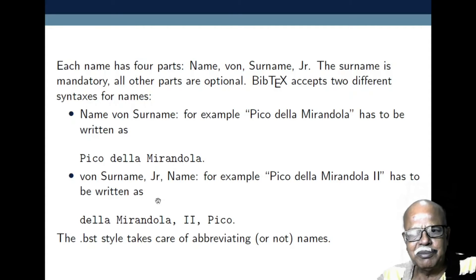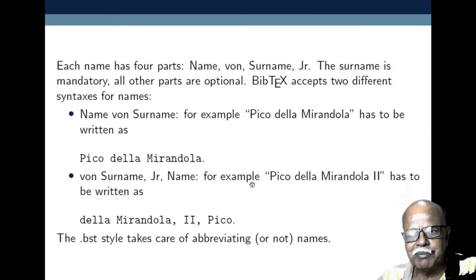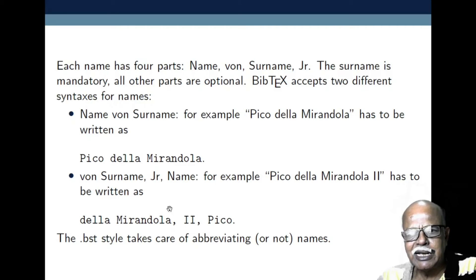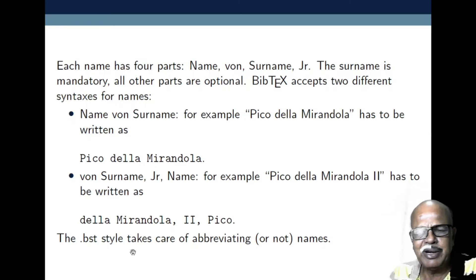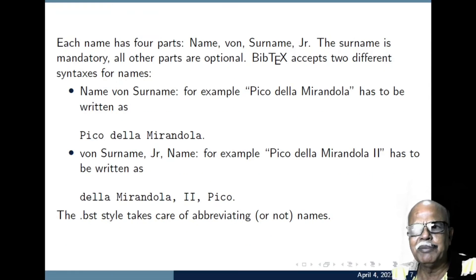The second format is: von, surname, junior, and then first name. For example, 'Pico della Mirandola the second' has to be written as: Della Mirandola, comma, second, comma, Pico. The BST file takes care of abbreviating or not abbreviating the names.